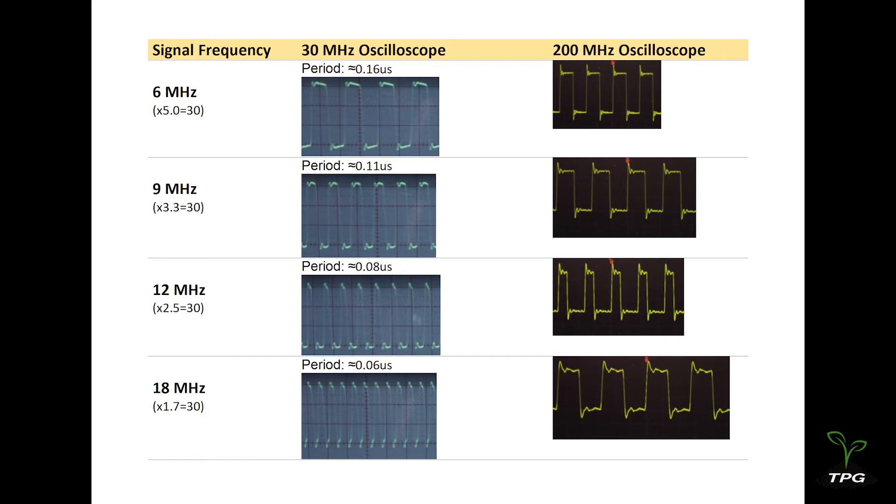As a rule of thumb, the bandwidth of the oscilloscope should be at least 5 times higher than the frequency of the input signal. This will allow it to capture up to the fifth harmonic of the square wave signal with minimal signal attenuation.